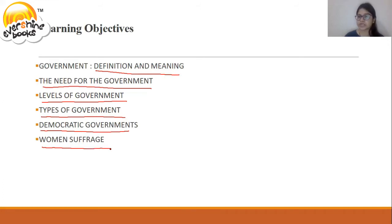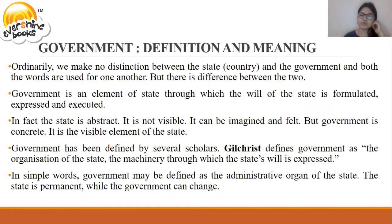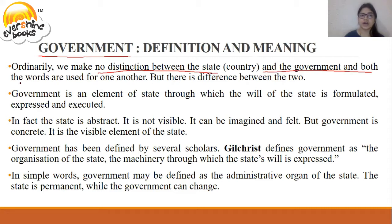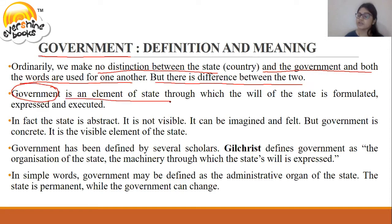Let's move ahead and understand the definition and meaning of government. We can often make no distinction between the state and the government, and both words are used for one another. But there is a difference between the two. Government is an element of the state through which the will of the state is formulated, expressed, and executed.